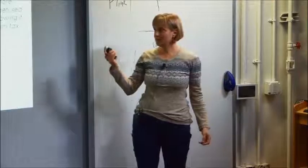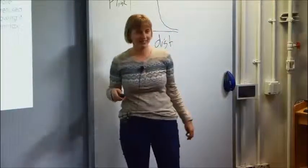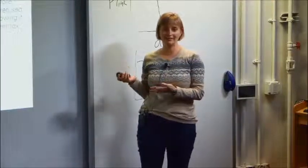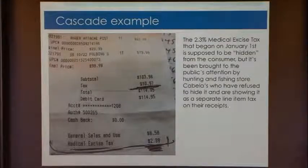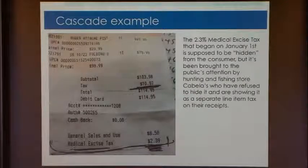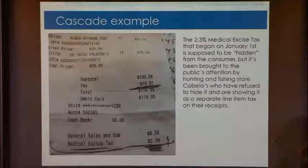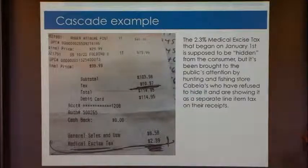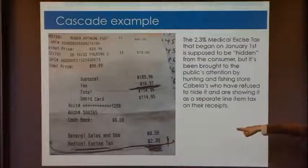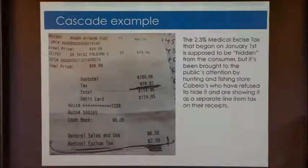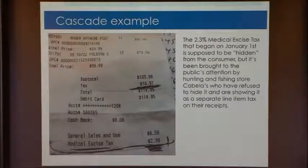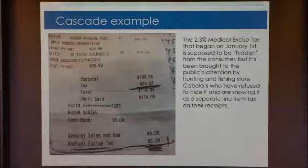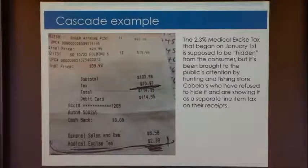This summer, this photo was uploaded to Facebook. It's a Cabela's receipt. Cabela's is a sporting goods store. The caption said something like, the Obama administration doesn't want you to know that you're paying extra taxes for Obamacare. But Cabela's is not afraid to show this. They've shown separately this medical excise tax that you're paying for while you're purchasing the stock for your rifle or your pistol holster.